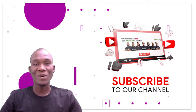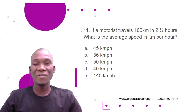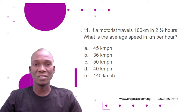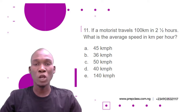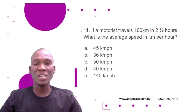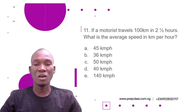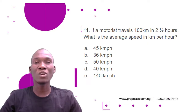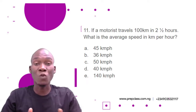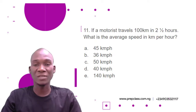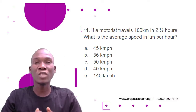Let's start questions for today. Question 11: If a motorist travels 100 kilometers in two and a half hours, what is the average speed in kilometers per hour? The options are: A) 45 km/h, B) 36 km/h, C) 50 km/h, D) 40 km/h, E) 140 km/h. From the question we have to find the average speed, given the distance traveled which is 100 kilometers and the time spent which is two and a half hours.